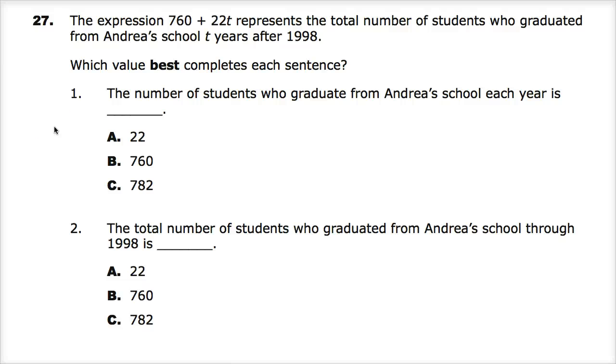Welcome to this Integrated Math 1 practice test for 10 Ready TCAP. Question number 27. We're in subpart 3. Almost done. The expression 760 plus 22t represents the total number of students who graduated from Andrea's school t-years after 1998. And we need to find values that complete these sentences.